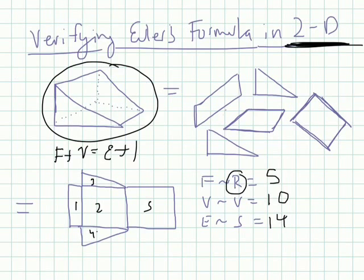And substituting these values into our formula, we could see that faces, does five plus ten equal fourteen plus one? Yes, fifteen equals fifteen. So we verified Euler's formula in two dimensions as well. Good luck in your book, and I'll talk to you next time. Thanks, bye.